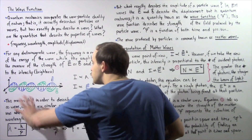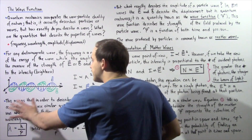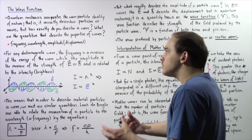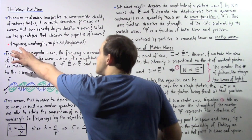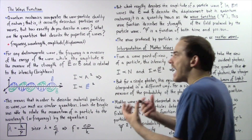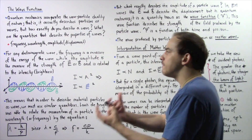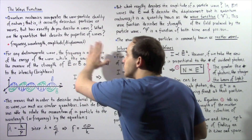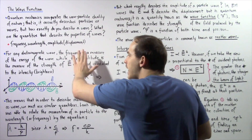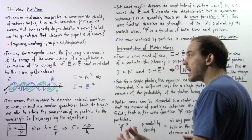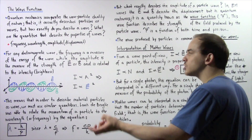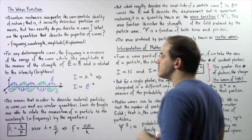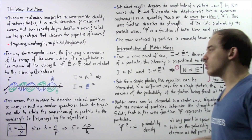For electromagnetic waves, as shown below, we were able to relate the frequency of the wave to the energy of the photon, and we were also able to relate the amplitude of the wave to the measure of the strength of the electric or magnetic field, or to the intensity or brightness of our wave.